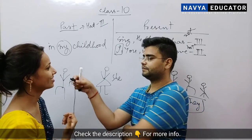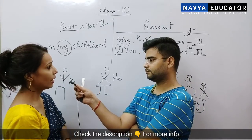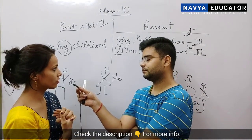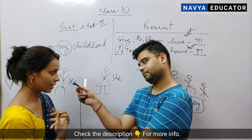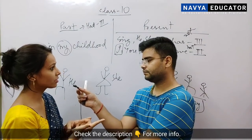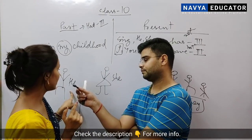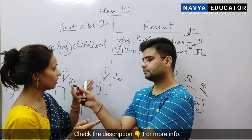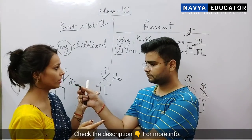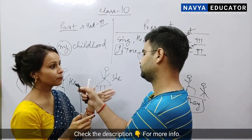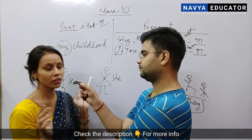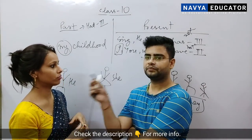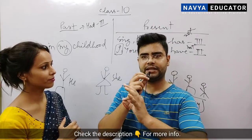Next sentence: I had purchased a doll in my childhood. You had purchased a car in your childhood. He had purchased a cycle in his childhood. She had purchased a doll in her childhood. They had purchased so many toys in their childhood. We all had purchased so many toys in our childhood.